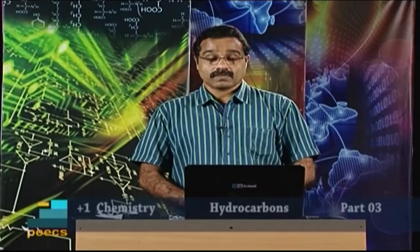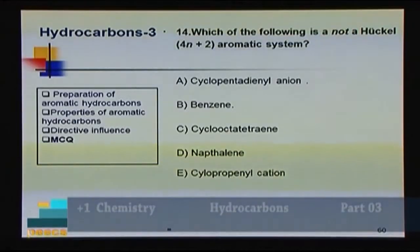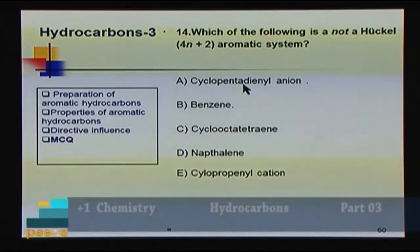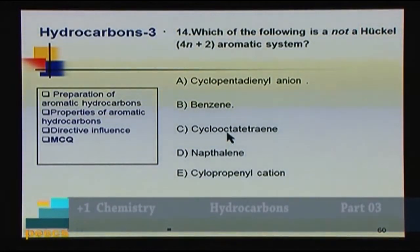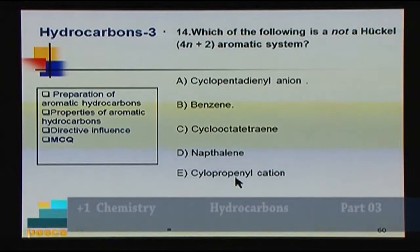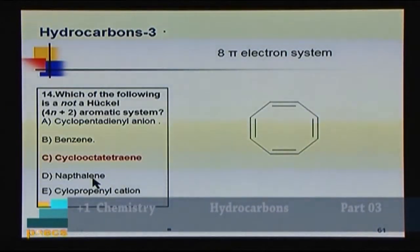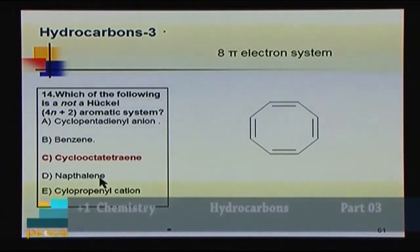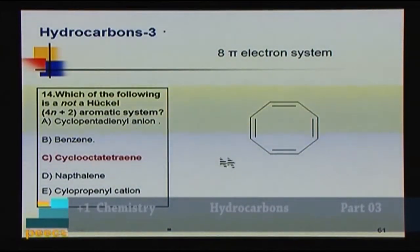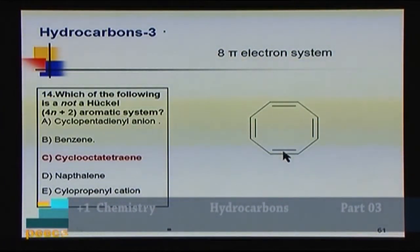Question 14: Which of the following is NOT a Hückel (4n+2) aromatic system? A) cyclopentadienyl anion (6 π e⁻), B) benzene (6 π e⁻), C) cyclooctatetraene (8 π e⁻), D) naphthalene (10 π e⁻), E) cyclopropenyl cation (2 π e⁻). Cyclooctatetraene contains 8 pi electrons, which does not fit the 4n+2 rule, so it is not aromatic. Answer: C.